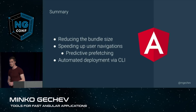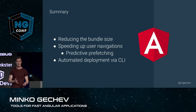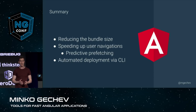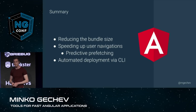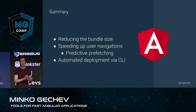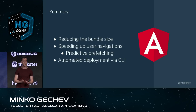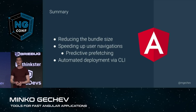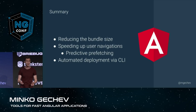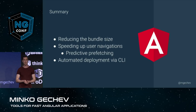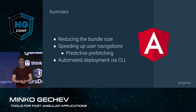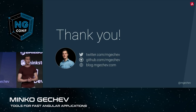So just a quick recap. Today we saw how we can reduce the bundle size of your applications by using differential loading. After that, we discussed how we can use lazy loading per component or routing level, and how we can use preloading or prefetching based on QuickLink or predictive prefetching with GuessJS. And finally, we saw how you can deploy your applications automatically from the CLI and make sure that you're following best practices so that your users get the best possible experience. Thank you very much for your attention.